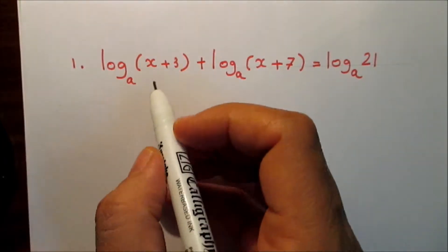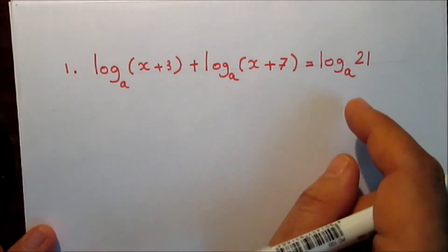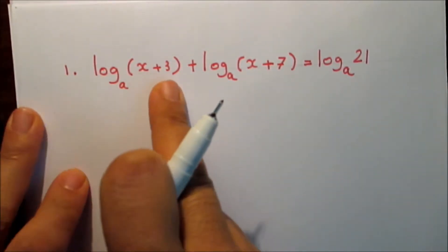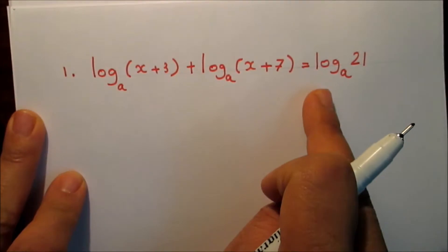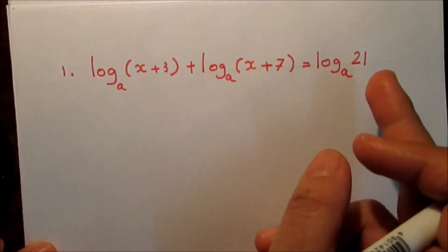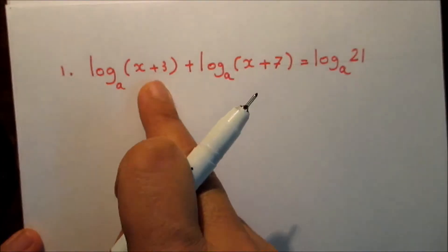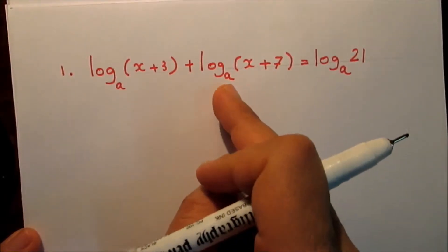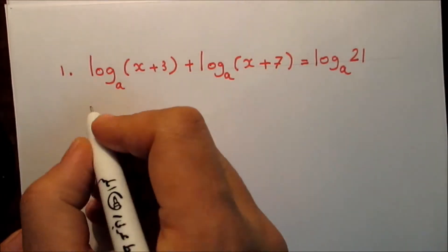Find in R the solution set of the following logarithmic equation: log base e of (x + 3) plus log base e of (x + 7) equals log base e of 21. Solving an equation means finding the value of x. We have addition outside the logarithm, so we turn it into multiplication inside the log using the first law of logarithms.